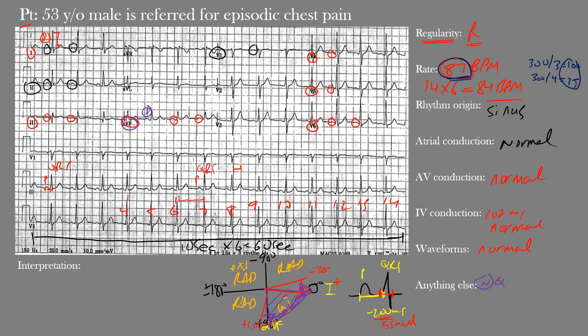We also have normal R wave progression in the precordial leads. R wave progression means the R wave amplitude should increase as we move from V1 through V6, because the left ventricle has the greatest mass and electrical mean axis heading in that direction. The R wave slowly increases in amplitude up until V5 — that is normal R wave progression.